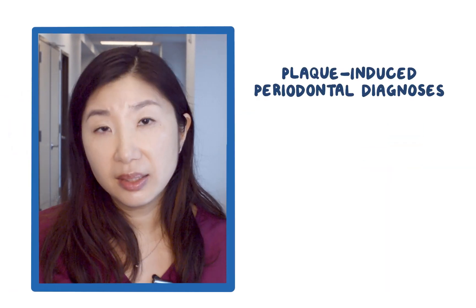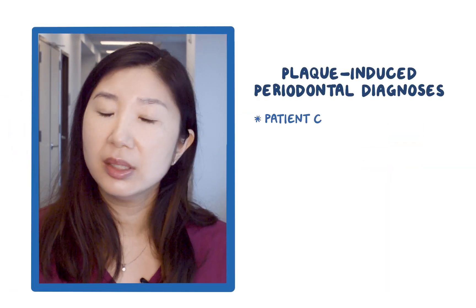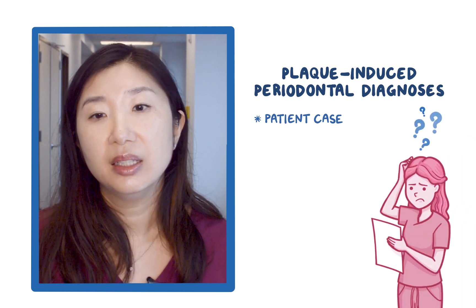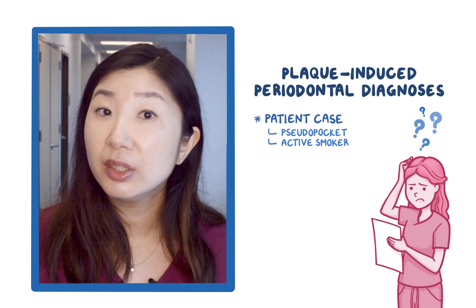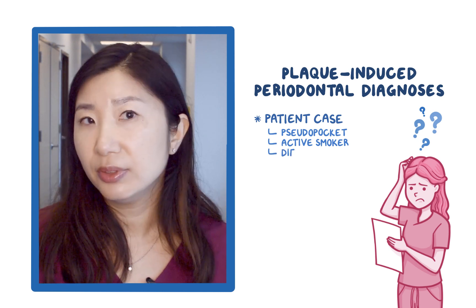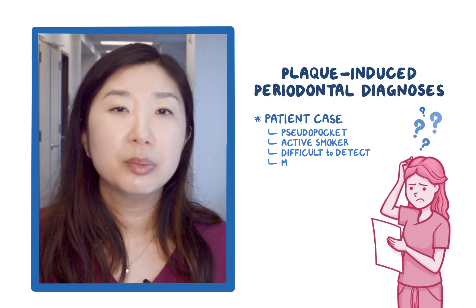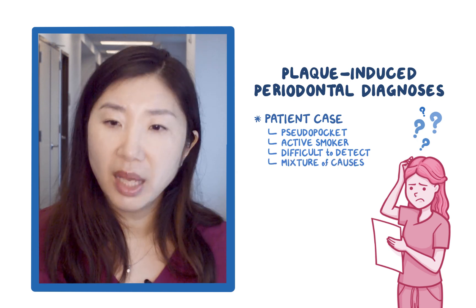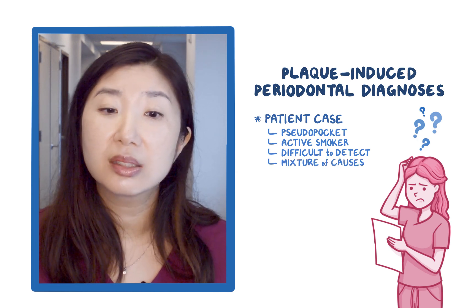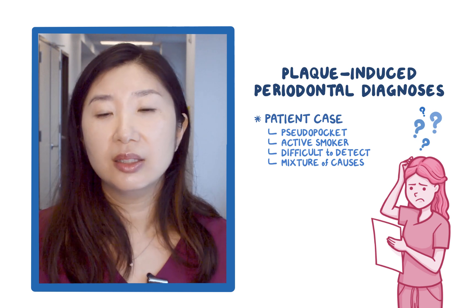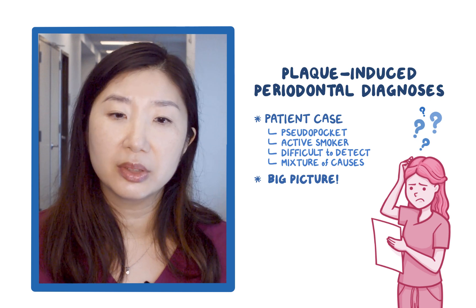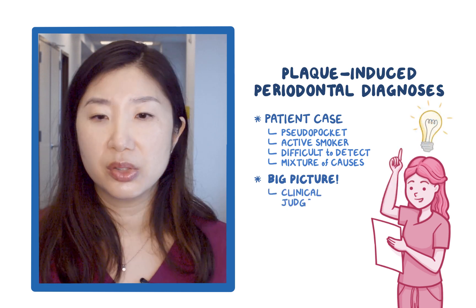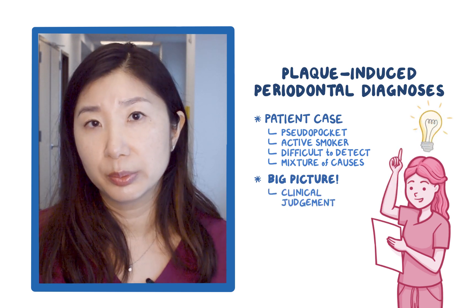In this video, we went over plaque-induced periodontal diagnosis. These are guidelines and case descriptions, and your patient case might not fit exactly. There might be pseudopockets, active smokers who have minimal bleeding on probing, attachment loss that is difficult to detect, or a mixture of periodontitis and non-periodontal causes of attachment loss. Remember to step back and take a look at the big picture. Along with the patient information and clinical data you gather, you will have to use your clinical judgment to make the most appropriate diagnosis.